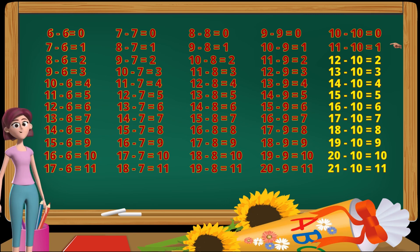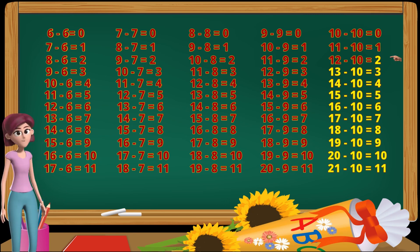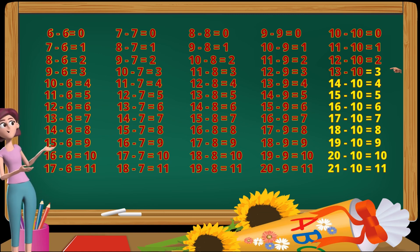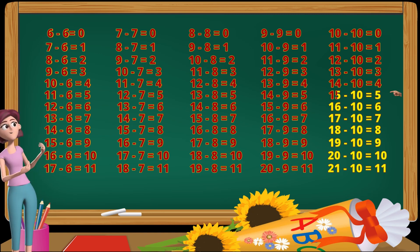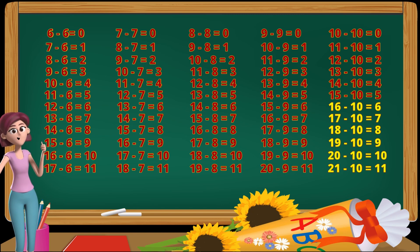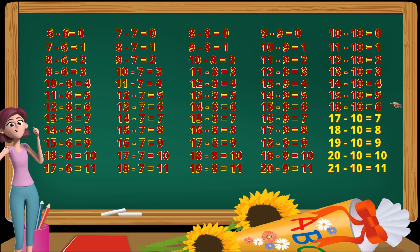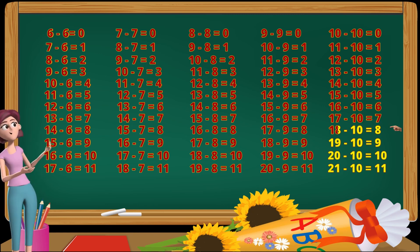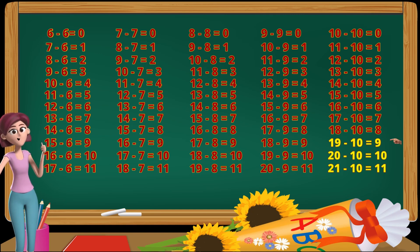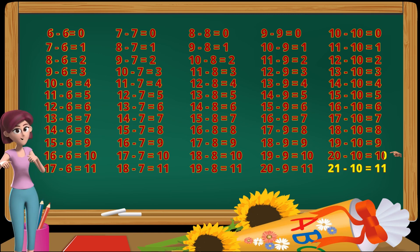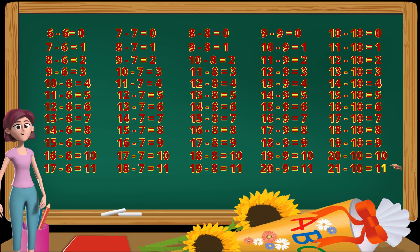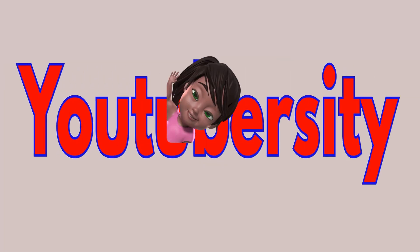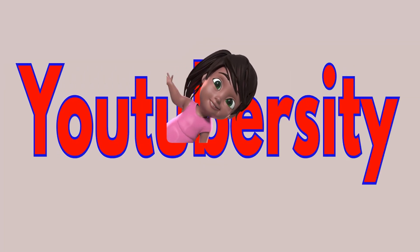11 minus 10 equals 1. 12 minus 10 equals 2. 13 minus 10 equals 3. 14 minus 10 equals 4. 15 minus 10 equals 5. 16 minus 10 equals 6. 17 minus 10 equals 7. 18 minus 10 equals 8. 19 minus 10 equals 9. 20 minus 10 equals 10. 21 minus 10 equals 11. Thank you.